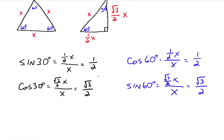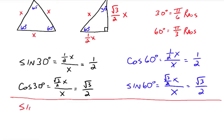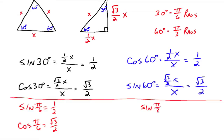That's in degrees. What about radians? 30 degrees is equal to pi over 6 radians, and 60 degrees is equal to pi over 3 radians. So the sine of pi over 6 is also one half, the cosine of pi over 6 is the square root of 3 over 2, the sine of pi over 3 is the square root of 3 over 2, and the cosine of pi over 3 is one half.